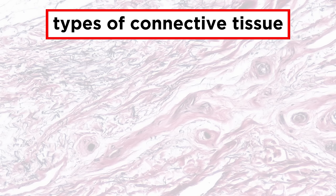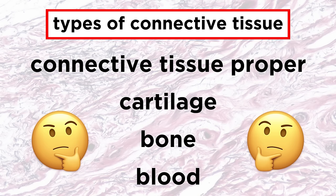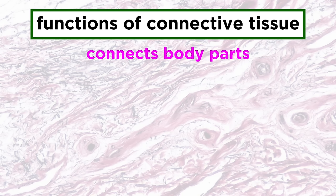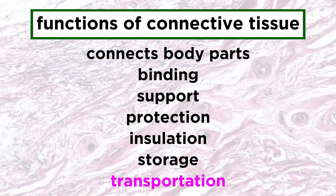The four main kinds of connective tissue are connective tissue proper, cartilage, bone, and blood. A few of these may not seem like they would qualify as tissue, so we must be aware that connective tissue does much more than just connect the body parts. Its functions include binding, support, protection, insulation, storage, and transportation of substances throughout the body.